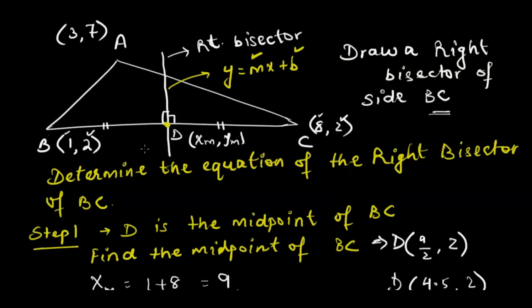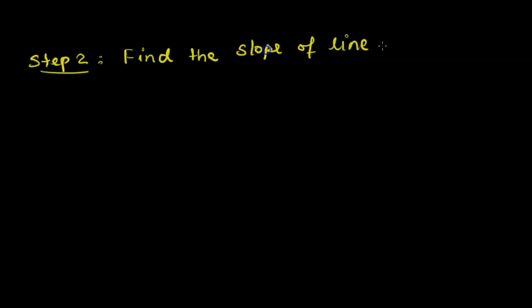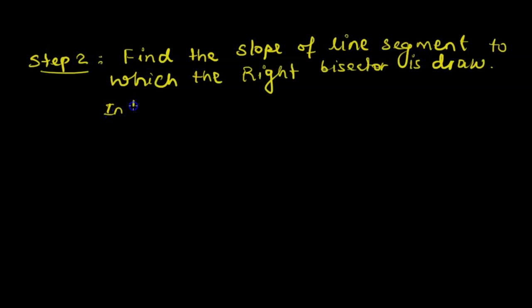Step 2 is to find the slope of side BC — the line segment to which the right bisector is drawn. The reason we find the slope of BC is because the right bisector is perpendicular to BC. Once we know the slope of BC, we can negatively reciprocate it to get the slope of the right bisector.